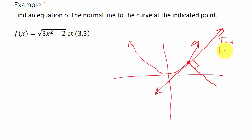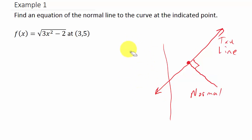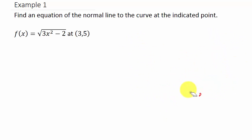This is the tangent line, and this line here is the normal line — it's the line that's perpendicular to the tangent line. So if you know how to find the equation of the tangent line, and if you're looking for that video, I have that posted also. But to find the equation of the normal line, what we have to do is take the derivative of this function and then evaluate it at the given point.